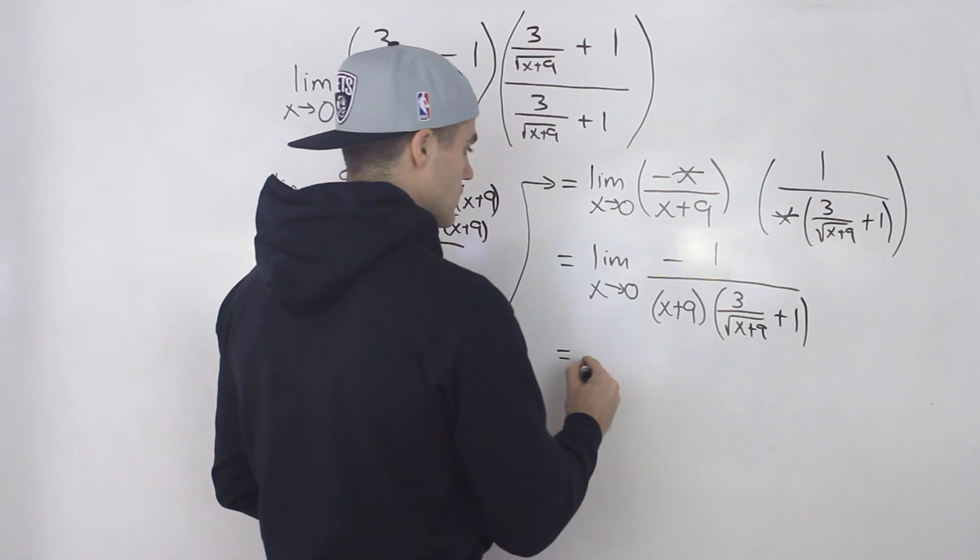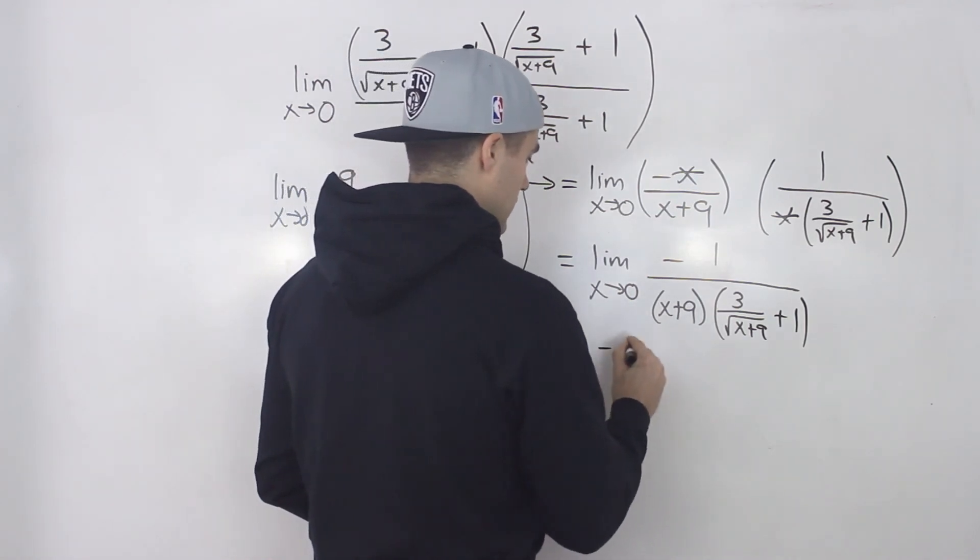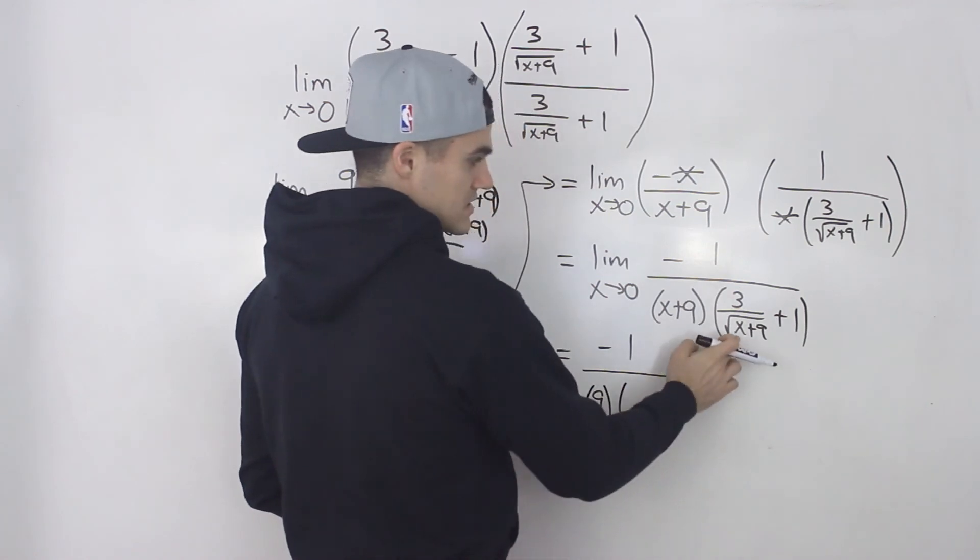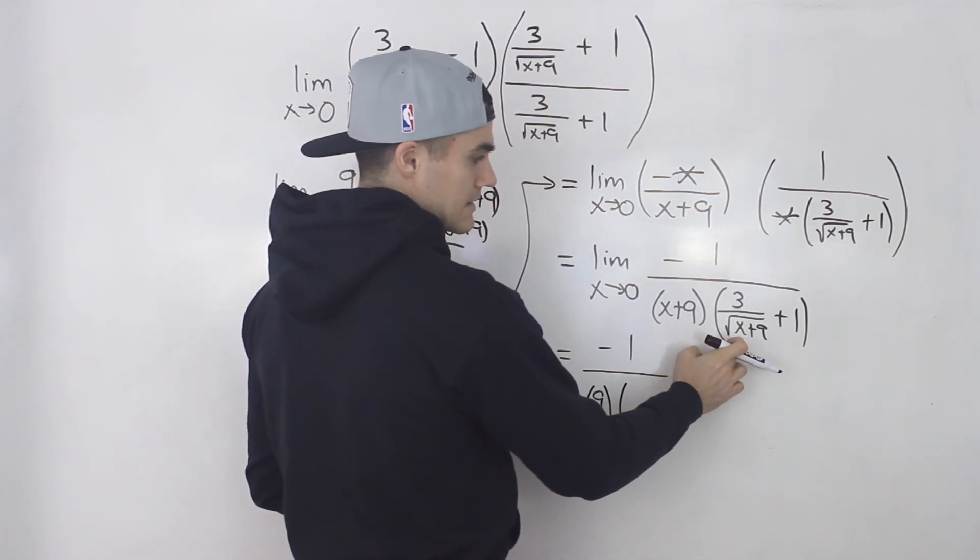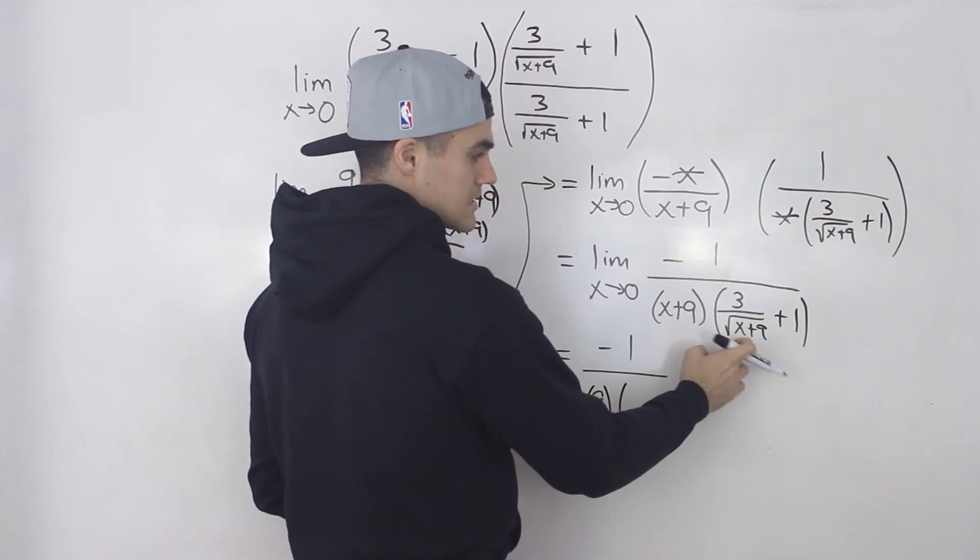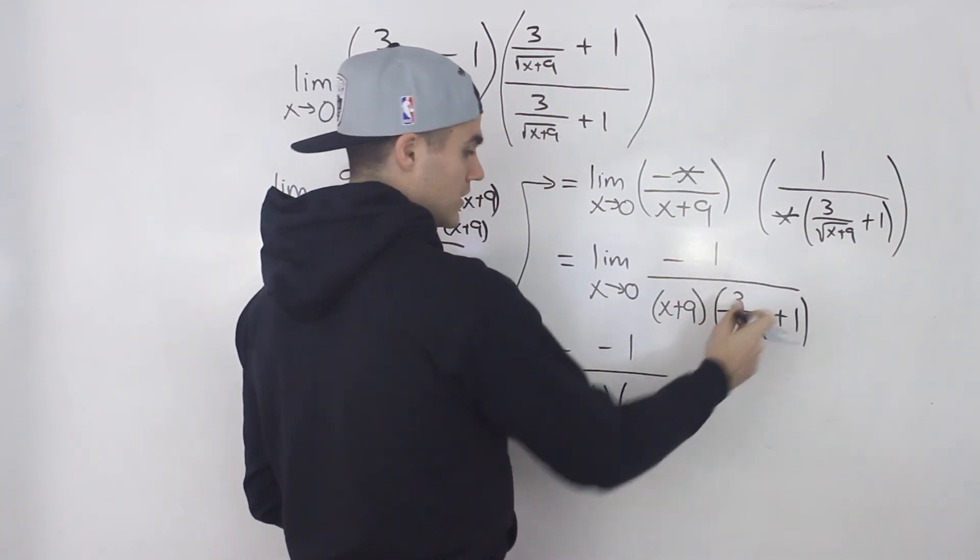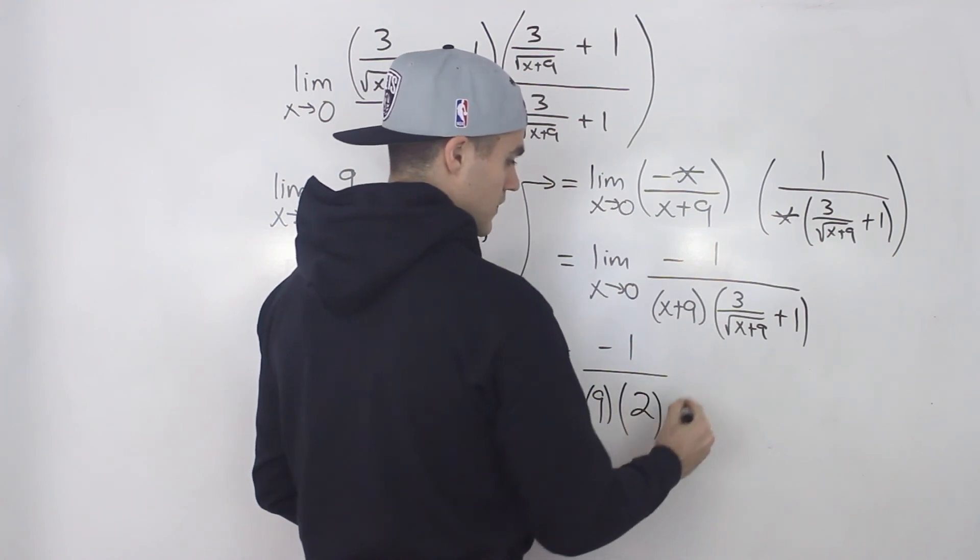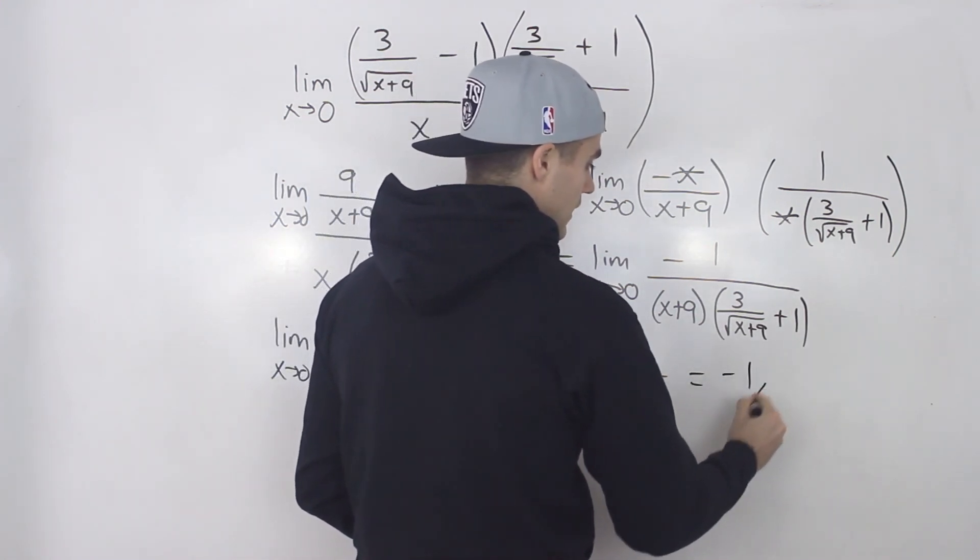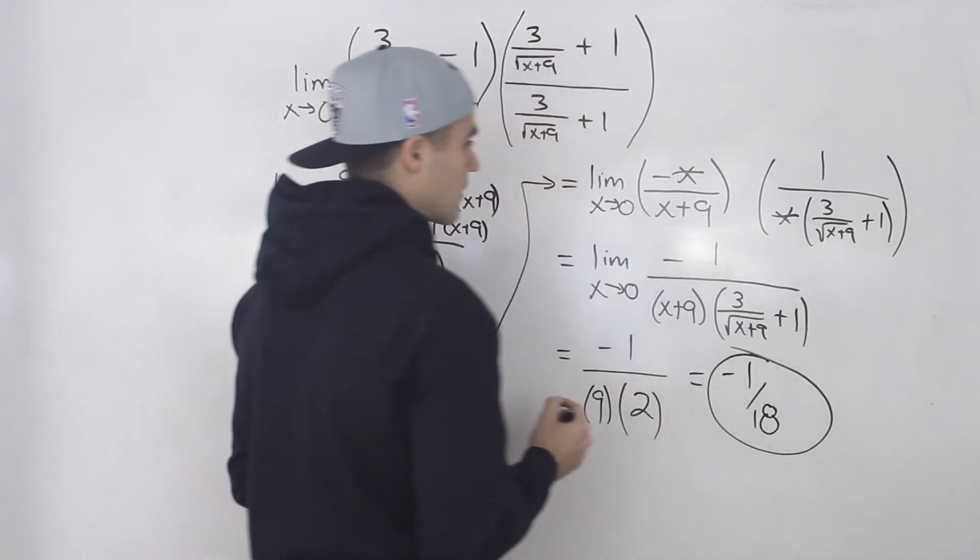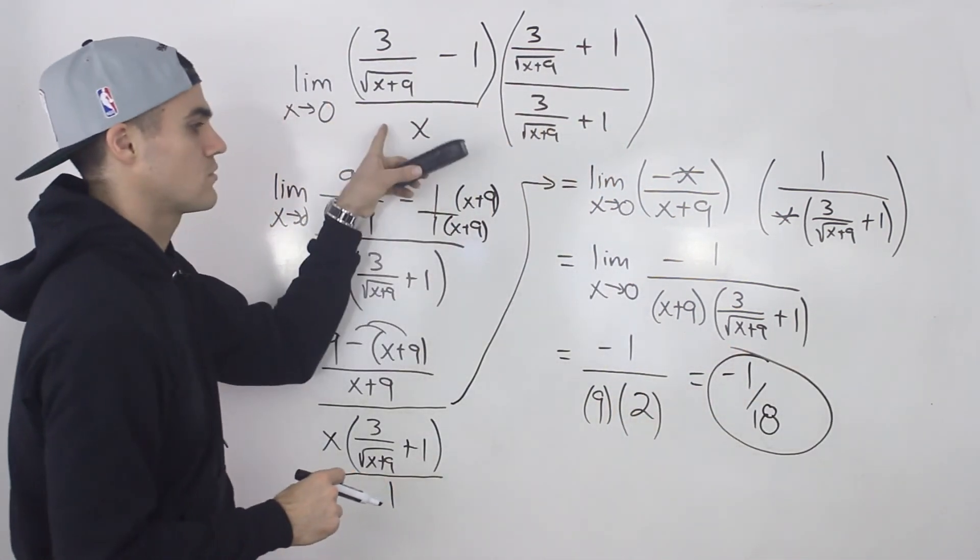So if we do that, we'll end up with negative 1 over this bracket will be 9. And then if we plug in 0 for x in this term, 0 plus 9 is 9, square root of 9 is 3. 3 over 3 is 1 plus 1 gives us 2. And so we're just left with negative 1 over 18. And that there is our final answer to this limit.